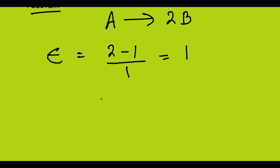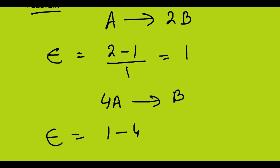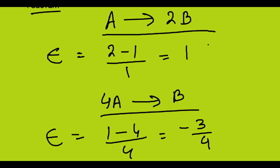Next, consider the reaction 4A gives B. In this case, epsilon equals 1 minus 4 divided by 4, which is minus 3 by 4. So this is how we can calculate epsilon for these simple cases.